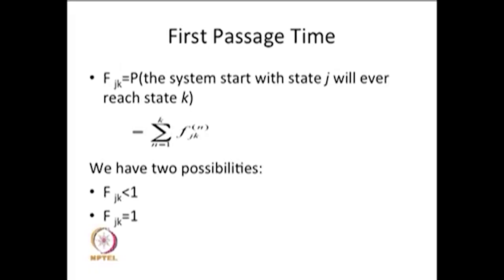Now I am going to give the next concept called the first passage time distribution. That is written as f suffix jk, which is nothing but the probability that the system starting with state j will ever reach state k. This probability f_jk is the same as the possibility that the system goes to state k in n steps for the first time, and the union over all possible first-time steps gives f_jk.